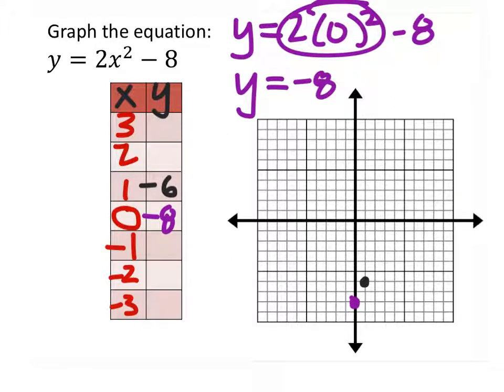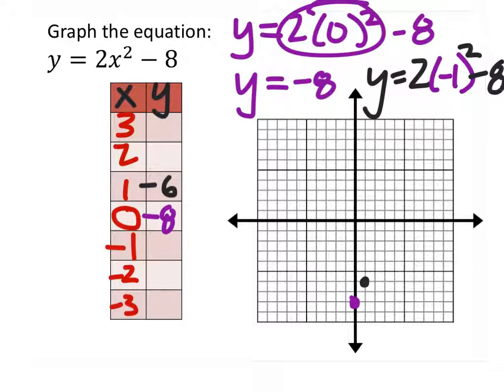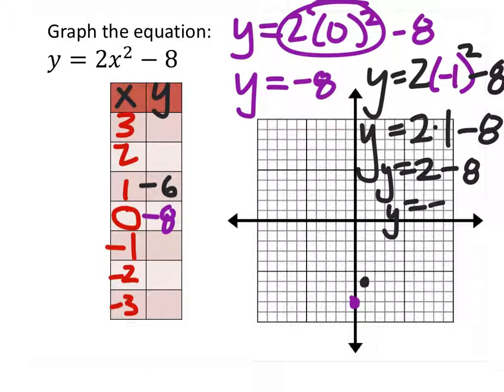Now here's the interesting thing about x² type equations. Let's use x = -1, so I got y = 2(-1)² - 8. Negative 1 times negative 1 is positive 1, so I got 2(1) - 8. Y = 2 - 8, so y = -6. This is looking pretty symmetric already. You see those two points right there?